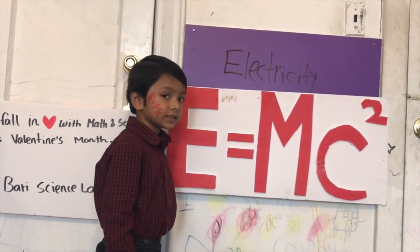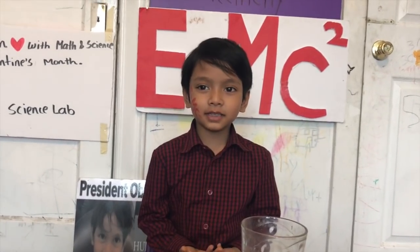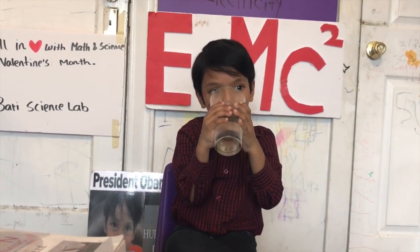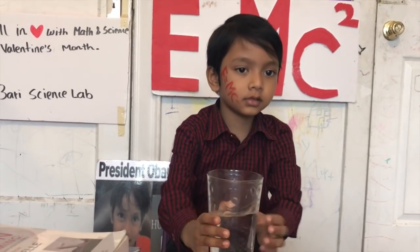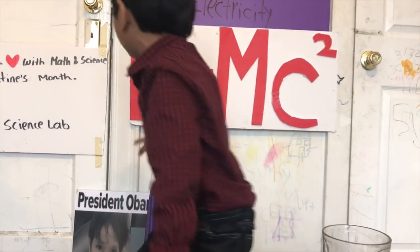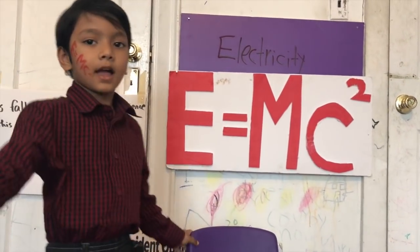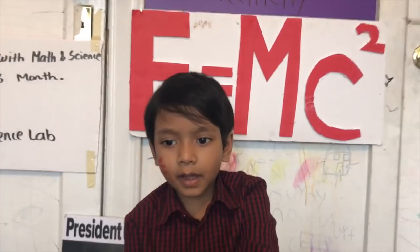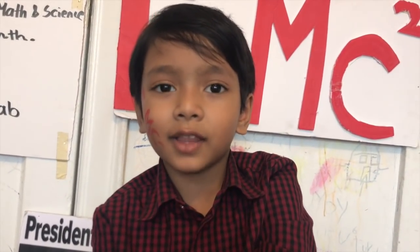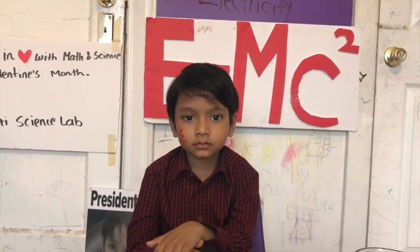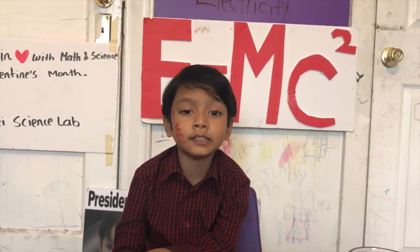Here's how Einstein did it. He thought about a flashlight emitting a light beam. He knew how much energy came out of the flashlight, and he observed that the flashlight weighed less after emitting the beam of light. The ratio between energy lost and mass lost is C squared.